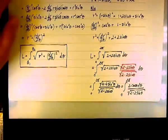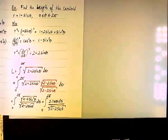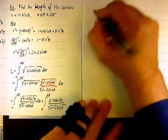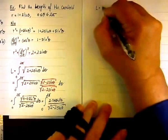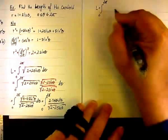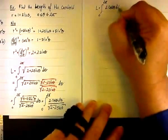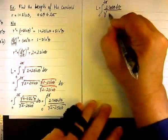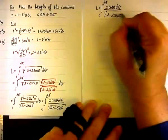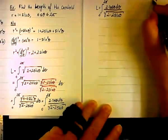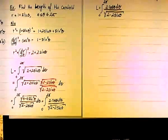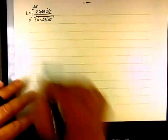At this point you should recognize the next step. Rewriting: the integral from 0 to 2 pi of 2 cos theta d theta over the square root of 2 minus 2 sine theta. That hint should suggest u-substitution. What is u? Let u equal 2 minus 2 sine theta.